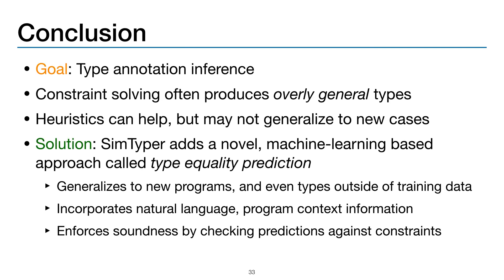In conclusion, we set out with the goal of inferring usable type annotations for Ruby programs. Existing approaches like constraint solving and heuristics often fall short. Our solution was to introduce SimTyper, which uses a novel machine-learning-based approach called type equality prediction. We believe this approach generalizes effectively to new programs, incorporates natural language and program context information, and enforces soundness of any inferred types. We think this is an effective approach to the goal of type annotation inference. Thanks for listening.